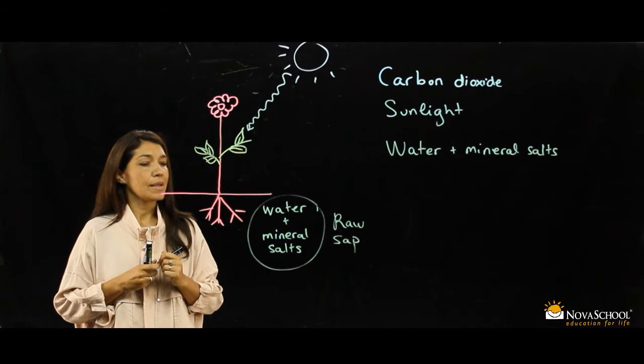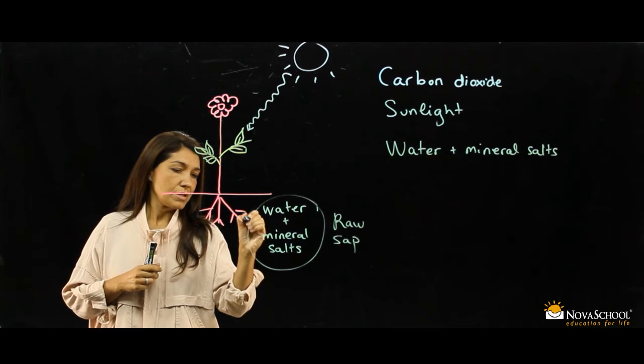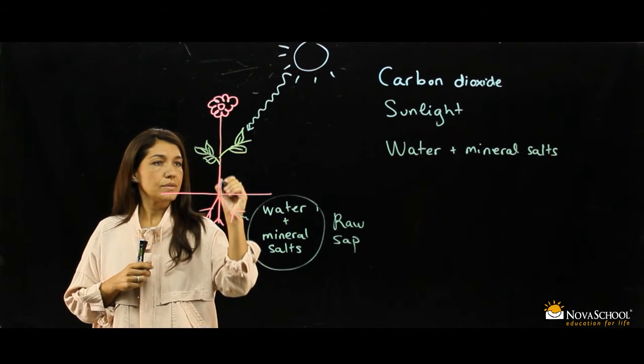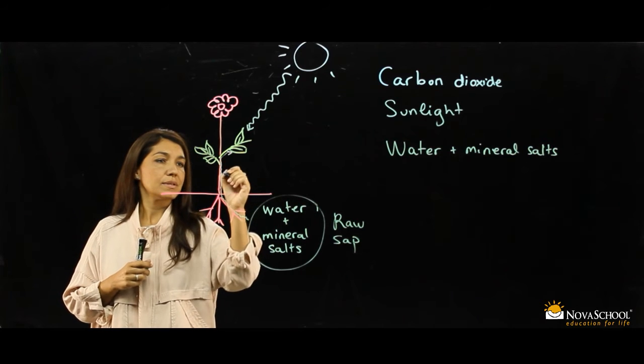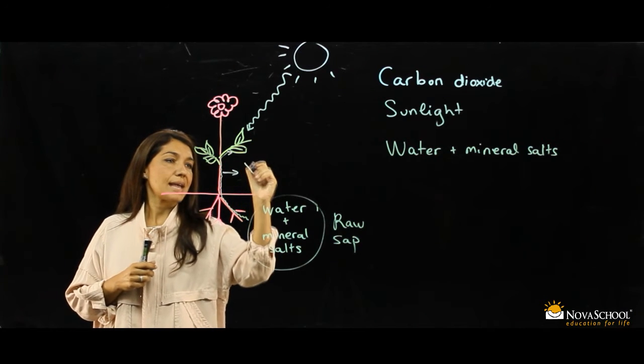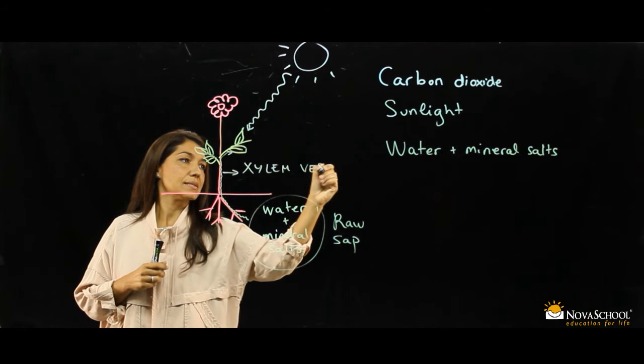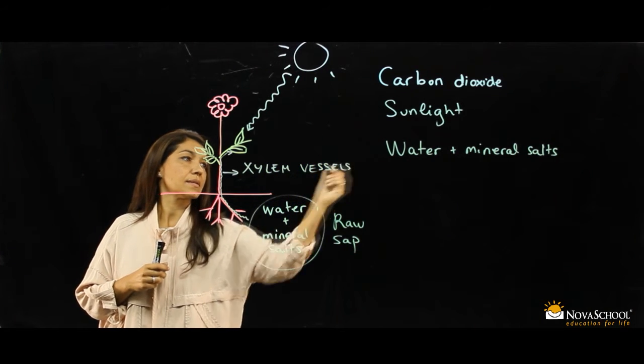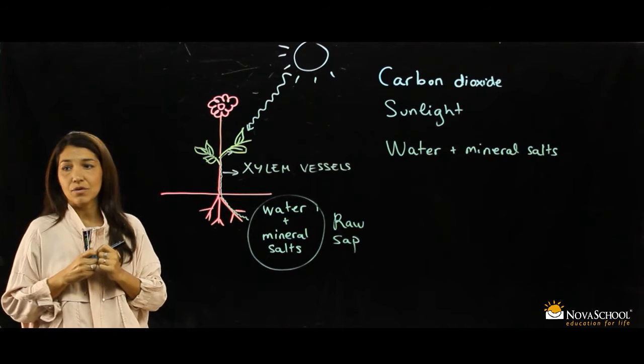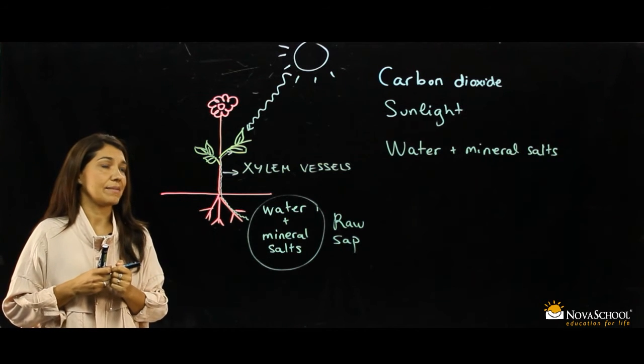The raw sap travels through the roots to the leaves through the xylem vessels, to the green parts of the plant, for example, the leaves.